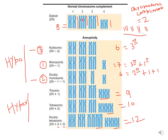In this diagram, diploidy is represented with 2n and has 8 chromosomes. Nullisomics are represented with 2n minus 2 because one homologous pair is missing — you can see that pair is absent compared to the diploid counterpart, so it has 6 chromosomes written as three pairs. Monosomics are represented with 2n minus 1 — one chromosome from the last pair is missing — giving 7 chromosomes written as three pairs plus one. Double monosomics are written as 2n minus 1 minus 1, where two chromosomes are missing from two different homologous pairs, giving 6 chromosomes written as two pairs plus one plus one.